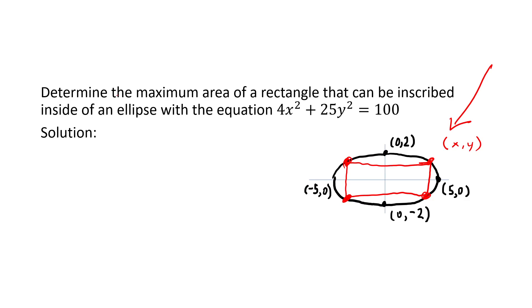The area of the rectangle — that's what we're trying to maximize — equals length times width. The top half of the length equals x (the horizontal distance from the y-axis), and by symmetry the other side equals x too, so the overall length is 2x. Similarly, y is the vertical distance above the x-axis, and by symmetry the full height is 2y. So the width is 2y.